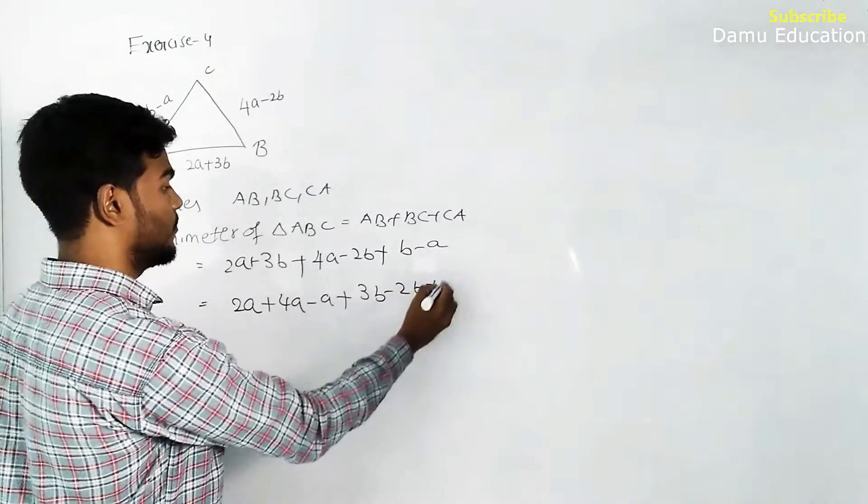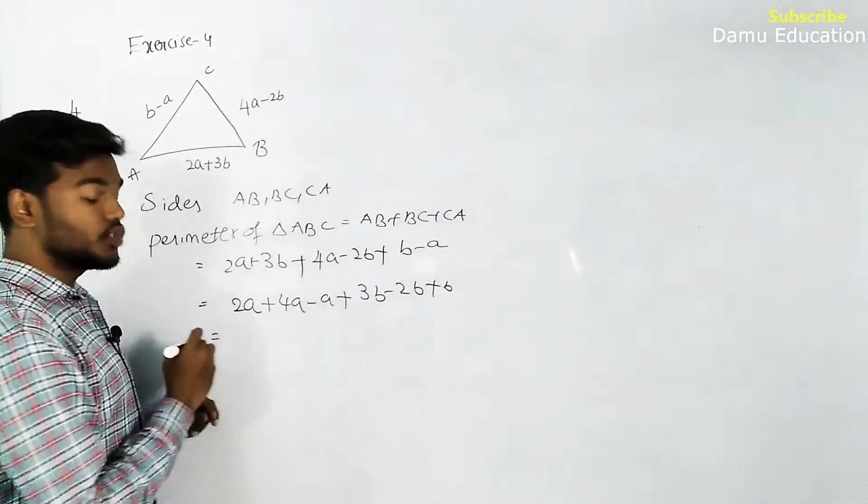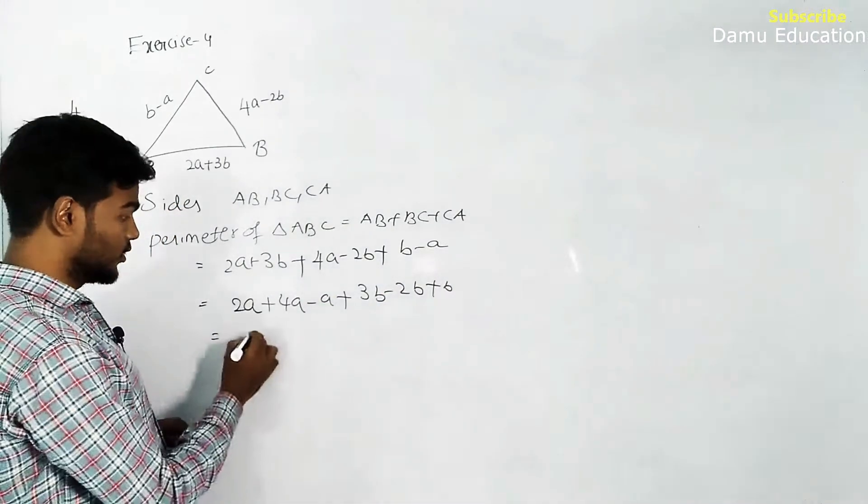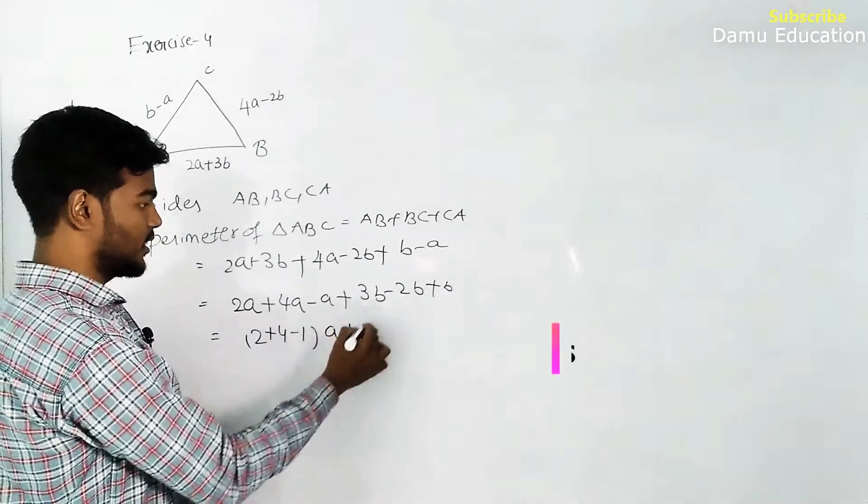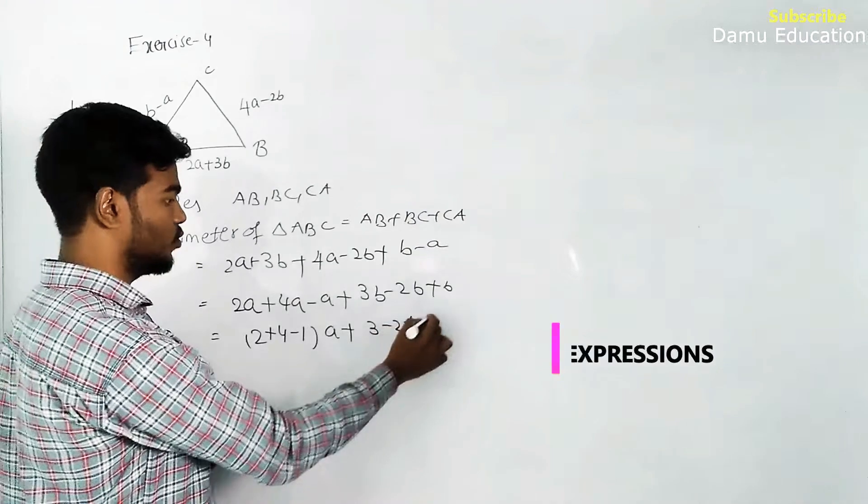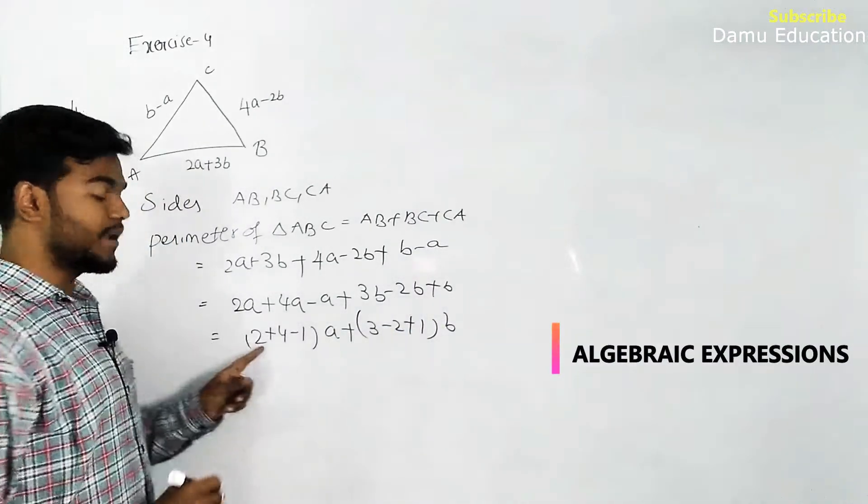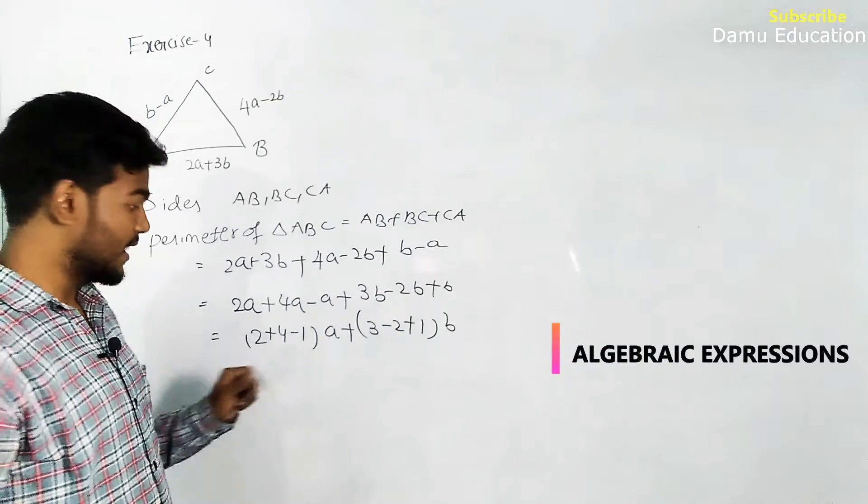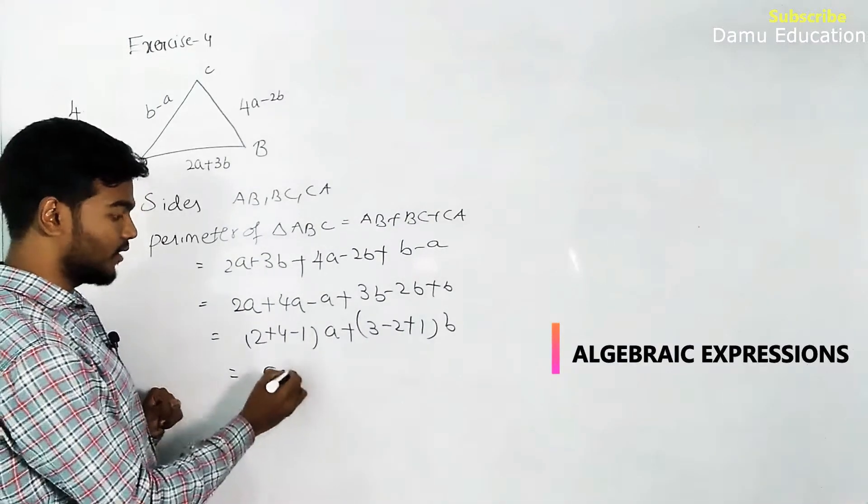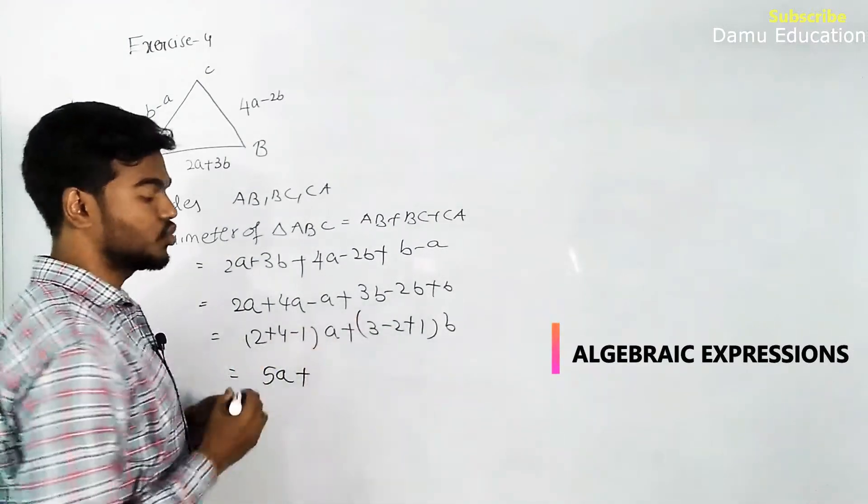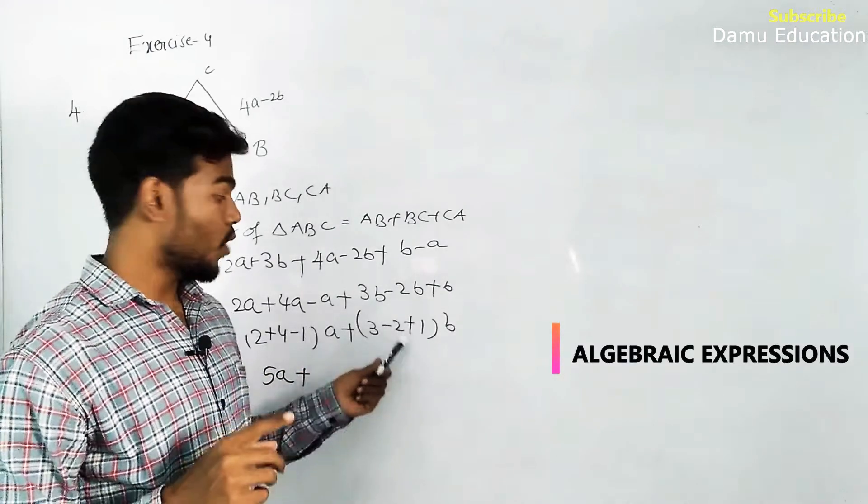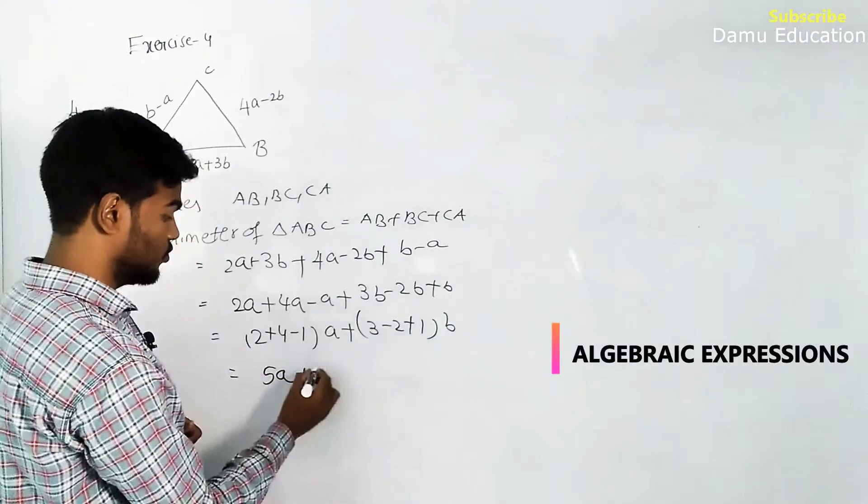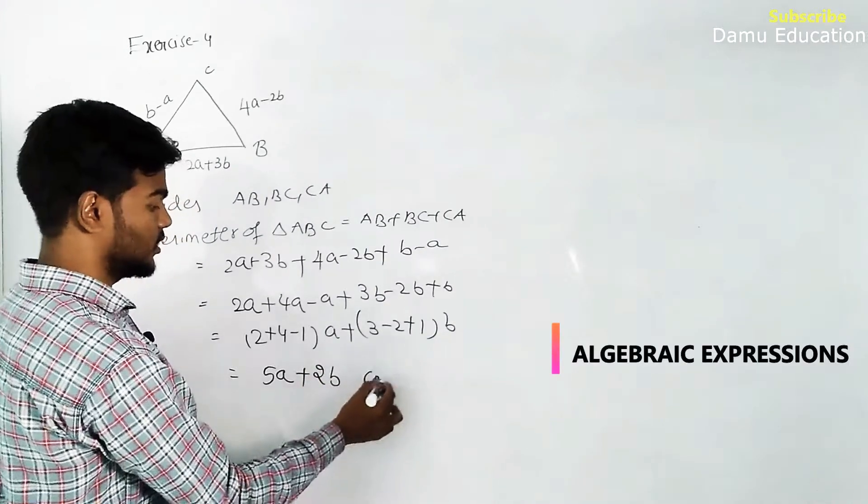Take common of a here: 2 plus 4 minus 1 into a, plus 3 minus 2 plus 1 into b. So 2 plus 4 will be 6, 6 minus 1 will become 5a plus 3 minus 2 is 1, 1 plus 1 is 2, 2b centimeters.